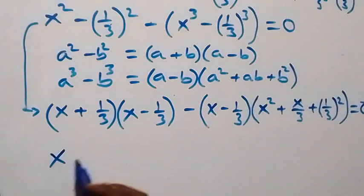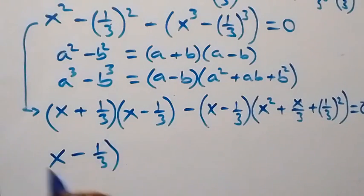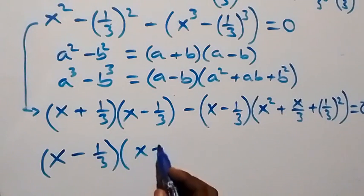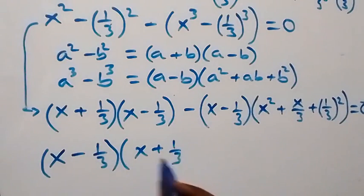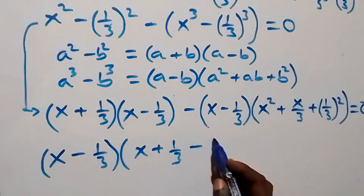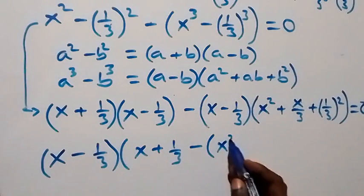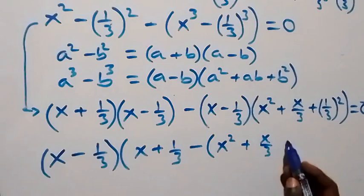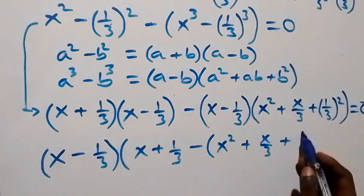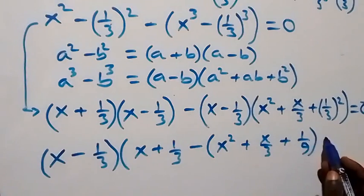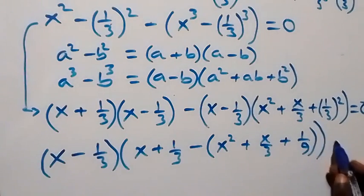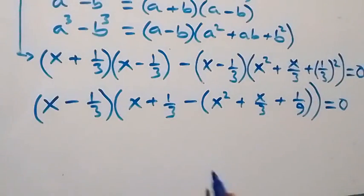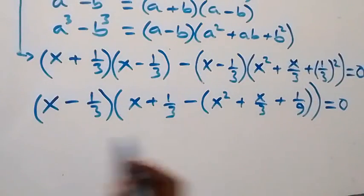From here we have (x − 1/3) common. We factor that out: (x − 1/3) times bracket (x + 1/3) plus x squared plus x over 3 plus 1 over 9, close bracket, equals zero.